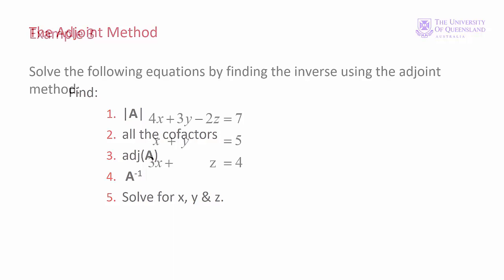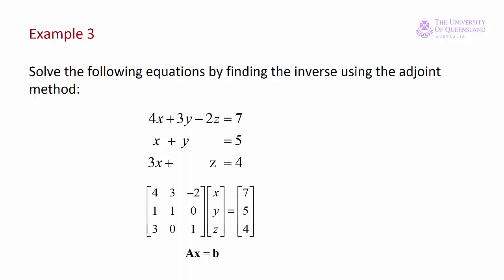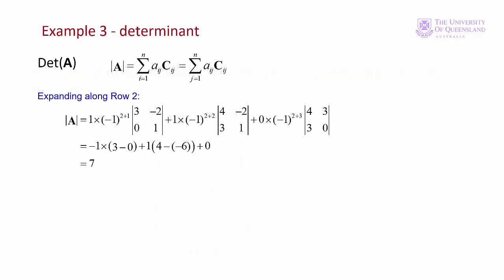Let's put that into practice with an example. If we have a system of three equations with three unknowns x, y, and z, we'll find the inverse and then solve for the three unknowns. First we get our equations into matrix form. Our next step is to find the determinant of the matrix of coefficients. Since we have zeros in rows 2 and 3, we would choose one of those to expand along.